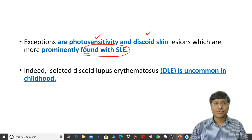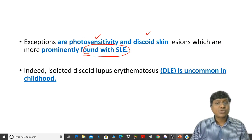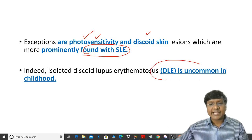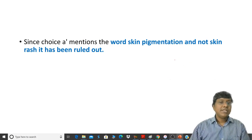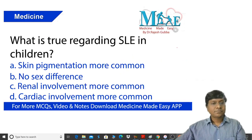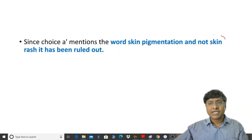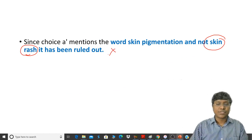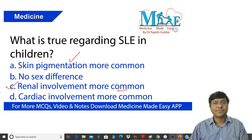Isolated discoid lupus erythematosus is uncommon in childhood — discoid lupus erythematosus in children occurs along with photosensitivity, but isolated DLE is uncommon in children according to the textbook. The first option mentions skin pigmentation, not skin rash, which is why it is ruled out. The true statement regarding SLE in children is that renal involvement is more common.